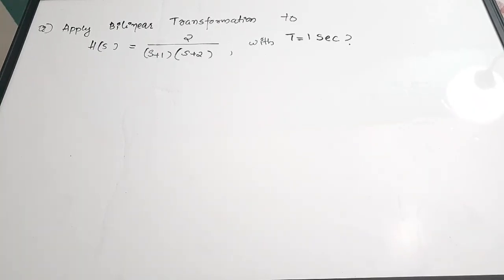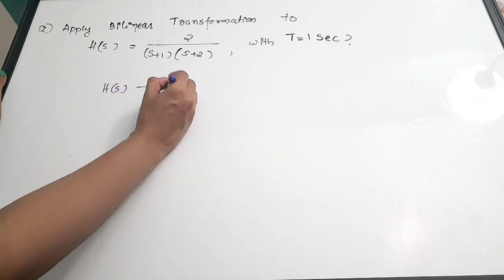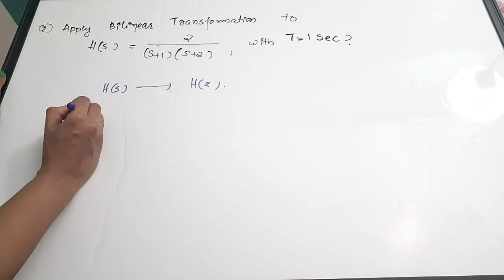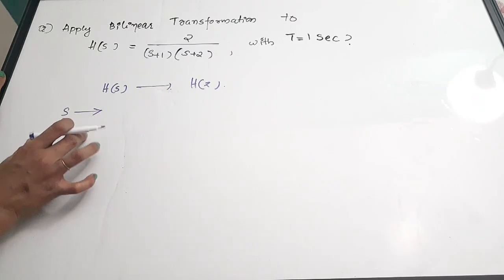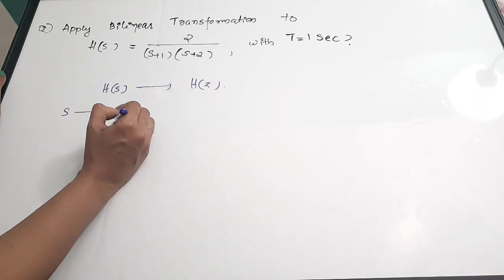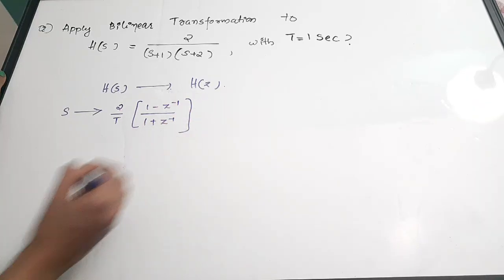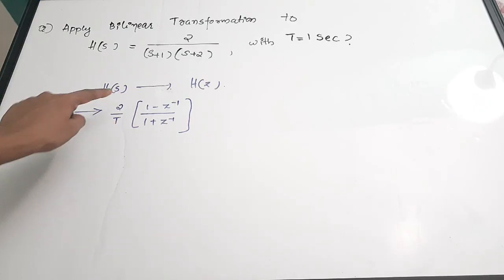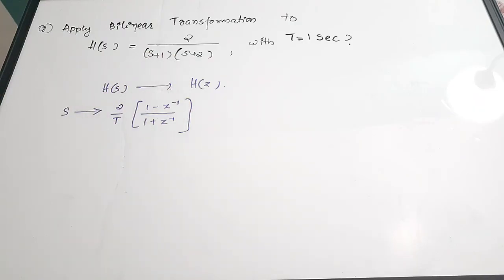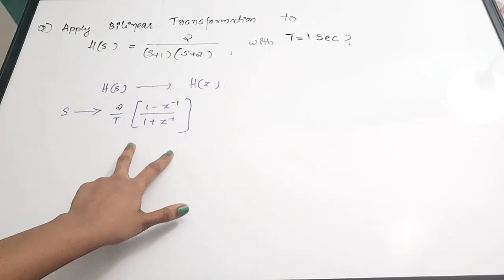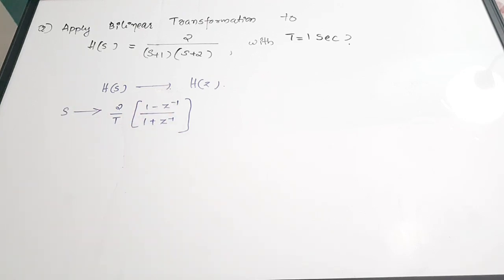Your transfer function will be given in H(s) form and you need to convert it to H(z). The way this conversion is done in bilinear transformation is by substituting s with (2/T) × (1 − z⁻¹)/(1 + z⁻¹). Wherever you see an s term, you replace it with (2/T) × (1 − z⁻¹)/(1 + z⁻¹).